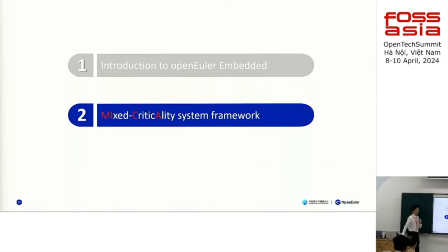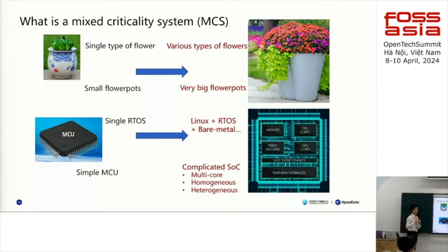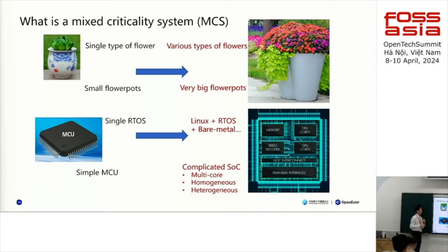Now I'd like to introduce our Mixed Criticality System framework. First, let me make a small metaphor to help you understand what a mixed criticality system is. In the past, we only had small flower pots — in each pot, we could only plant one single type of flower in very limited quantity. But with time, we have more mature pot-making technologies. Nowadays, we have very big flower pots — in each pot we can plant various types of flowers, and each type is isolated. For example, if one bunch of flowers dies, it will not affect other bunches.